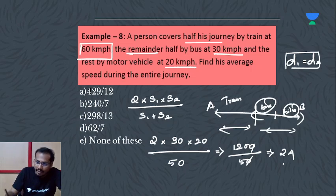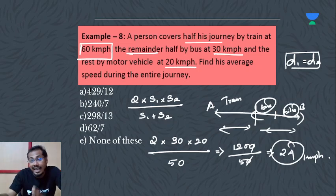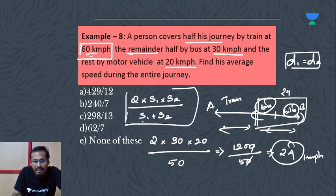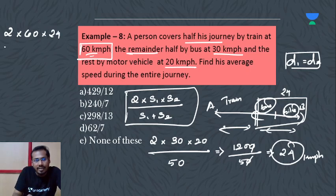So the second half average speed is 24 km per hour. The first half average speed is 60 km per hour. Overall, again use the formula: 2 times 60 times 24 divided by 60 plus 24 equals 84.